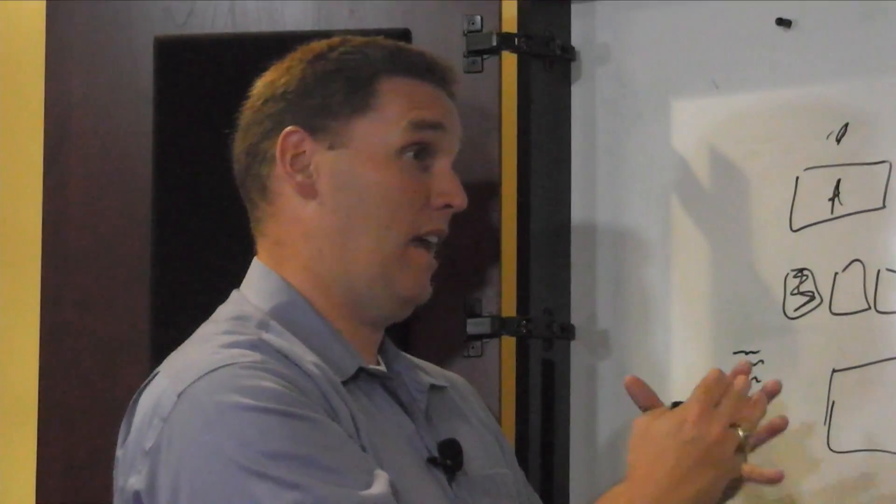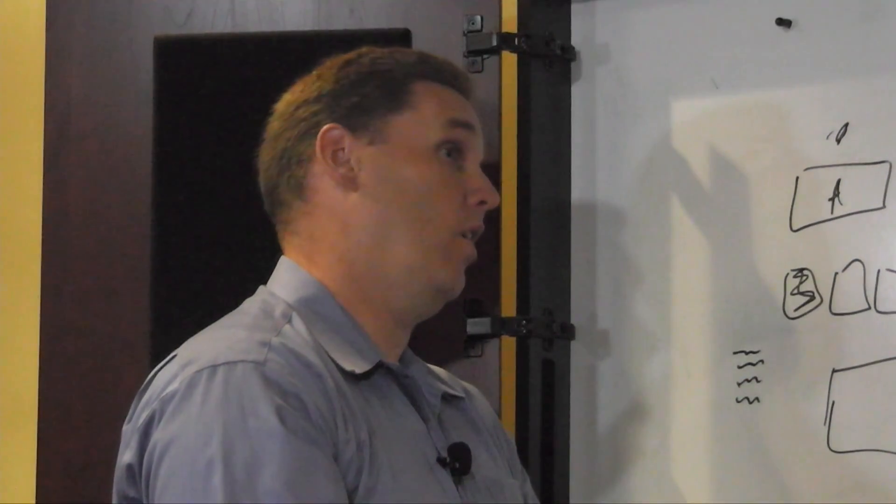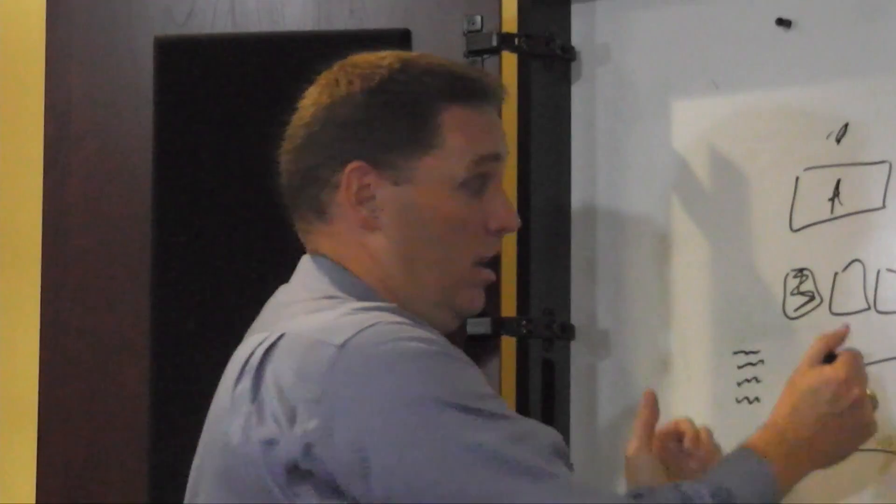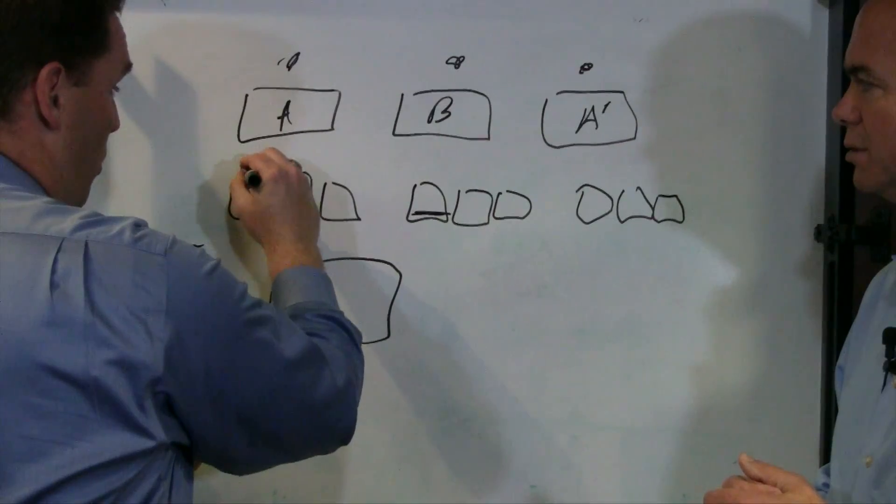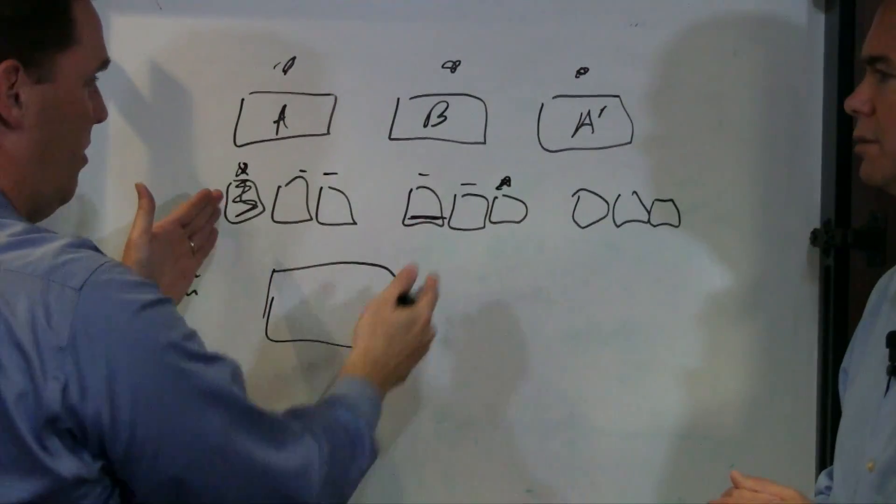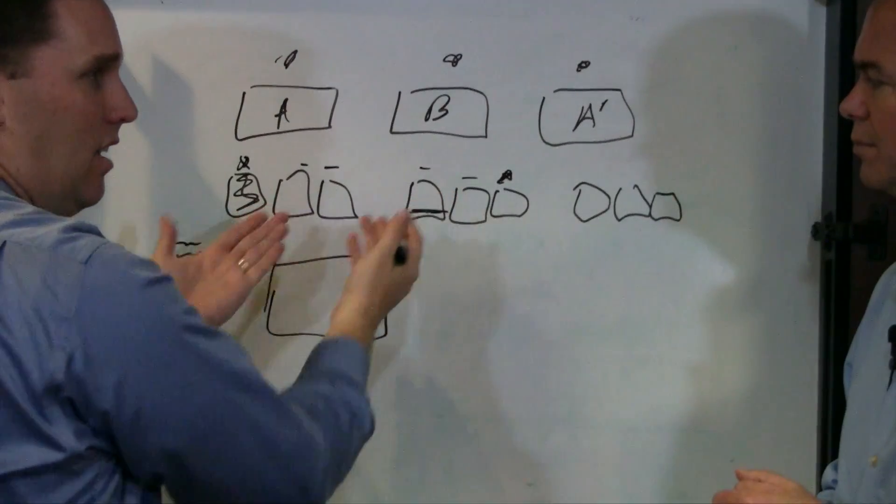So you can set individual thresholds at an array level, at a storage pool, even down to a LUN or a volume level that lets you understand, hey, this LUN right here is more important than these two LUNs. Or this LUN or this LUN. And this is an important one. You can set individual thresholds for those specific LUNs versus these.